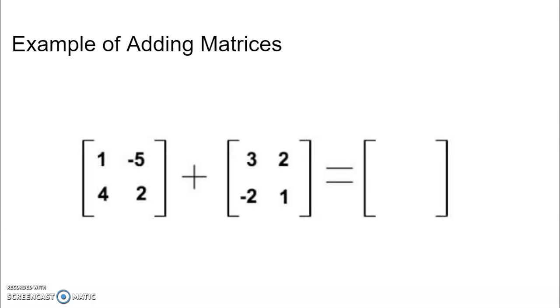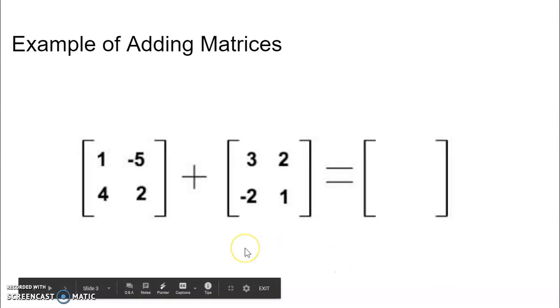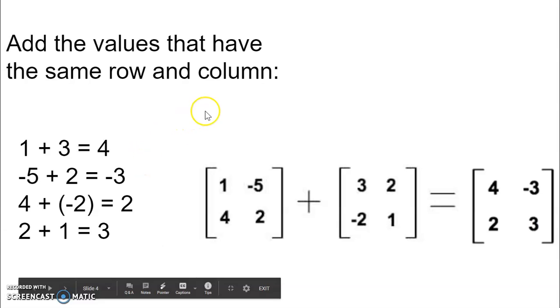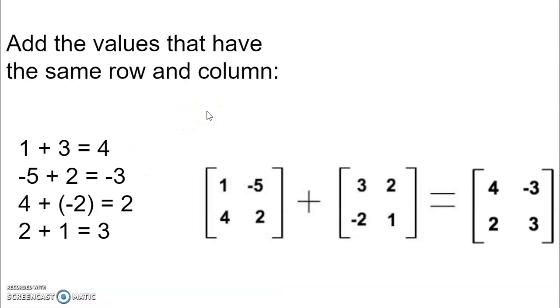So let's look at an example. Here we have two 2x2 matrices where they each have two rows and two columns. So how do we add these two? Well, it's quite simple. We can add the values that have the same row and column.